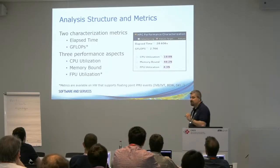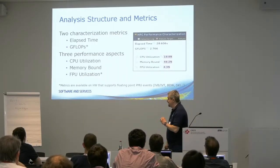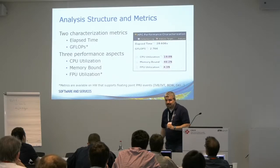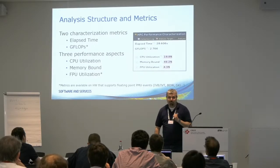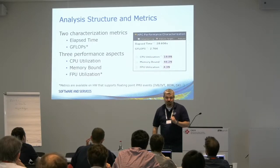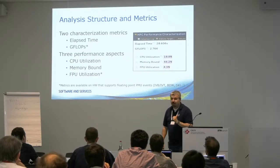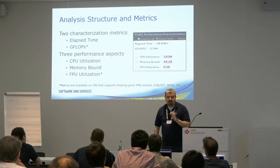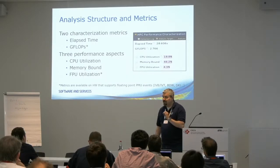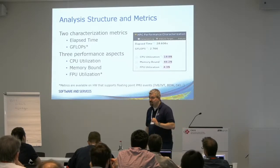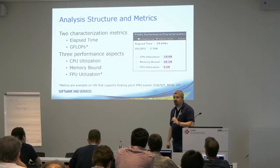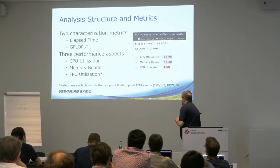The fun fact about counting floating point numbers on our machines is that we actually count floating point operations that have been issued for execution but not yet retired. So that means if you have a branchy code that causes branch mispredicts, you're overcounting. If you have a non-branchy code, the number is actually pretty accurate.